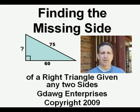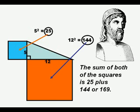Finding the Missing Side of a Right Triangle Given Any Two Sides. About 2,500 years ago, Pythagoras discovered that if you were to form squares from the sides of the two short sides of a right triangle,